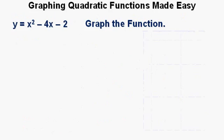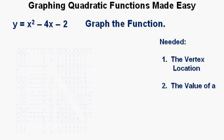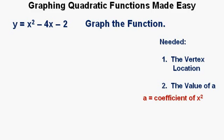Here's the first example we'll look at: y equals x squared minus 4x minus 2. Graph the function. As we proceed through these examples, I strongly encourage the viewer to get out graph paper and pencil to work along and learn a lot more that way. This is a developed skill, and for that, practice is needed. The value of a is simply the coefficient of x squared. Since we have x squared, that's 1x squared, so a equals 1.